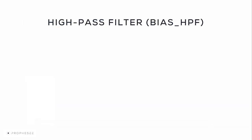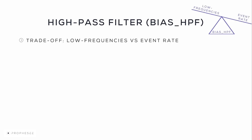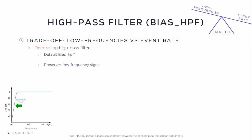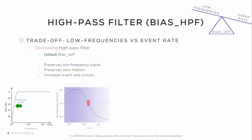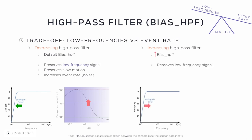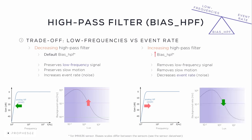Now we can focus on the high-pass filter. When adjusting the high-pass filter, consider the trade-off between detecting low frequencies or slow motion and the generated event rate. Keeping the default bias HPF value for the IMX636 sensor preserves the low frequency signal, preserves slow motion, and increases event rate including low frequency noise. Increasing the high-pass filter — meaning increasing bias HPF for the IMX636 — will remove low frequency signals, remove slow motion, and therefore decrease the event rate including low frequency noise.